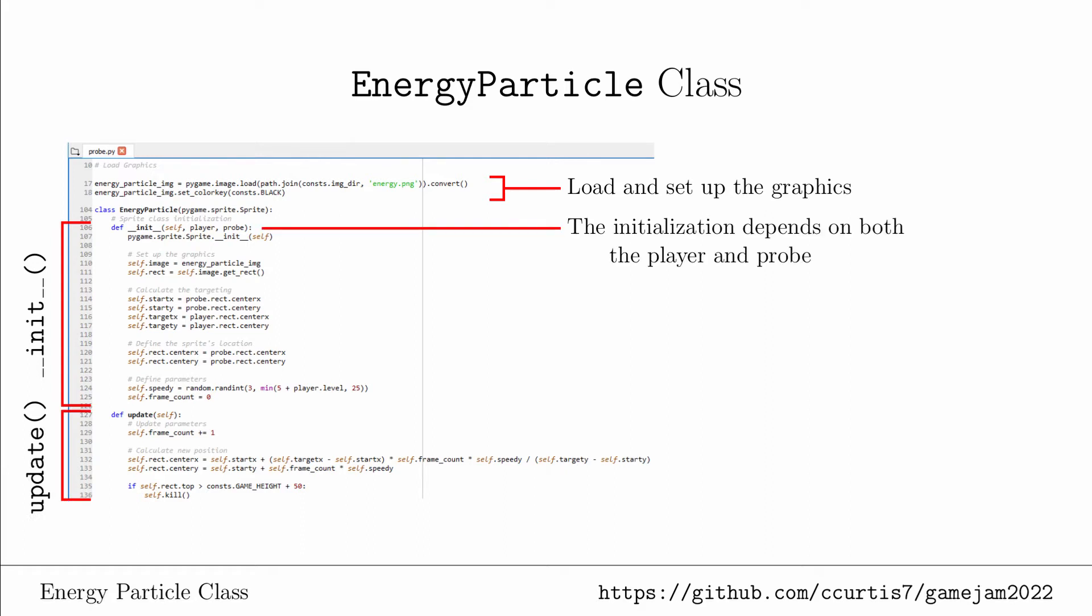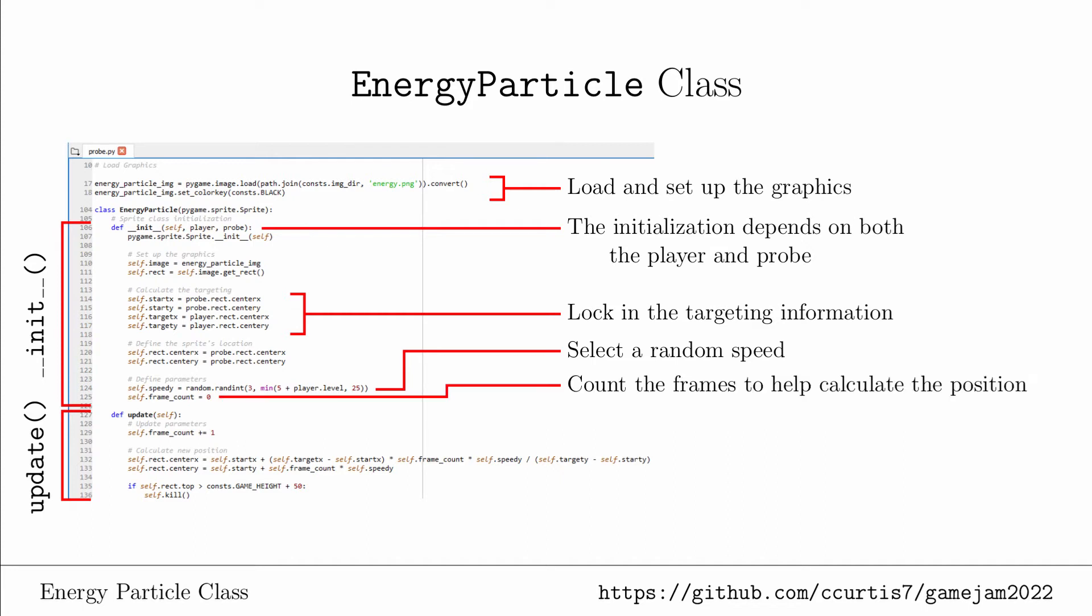The initialization method will need to know where the player is and which probe is firing. The targeting will create a straight line from the probe's position to the player's position. The speed of the shot will be randomly determined, allowing it to go faster at higher levels. We'll also keep track of the number of frames that have passed to help with calculating the position in the update method.